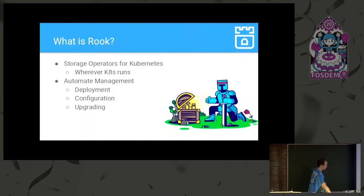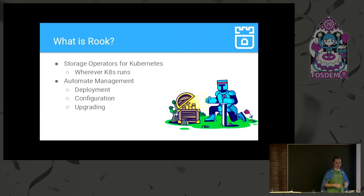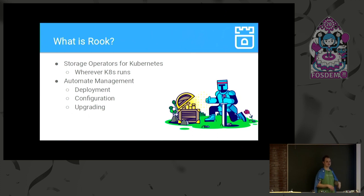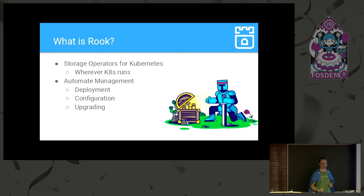So that's where we come to: what is Rook? Rook is a storage operator. The 'operator' part is simply as it implies — it operates things like Ceph, EdgeFS, and other storage systems, software, backends. The point with Rook is that you have Kubernetes, you put Rook on it, and you have Ceph or EdgeFS running. It's generally not just about Ceph — it's about making complex storage systems easy to run in your Kubernetes cluster, in containers.